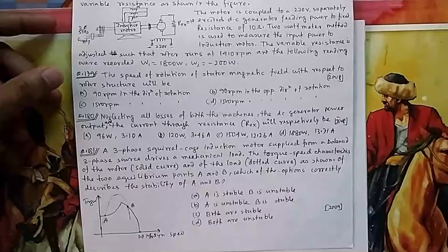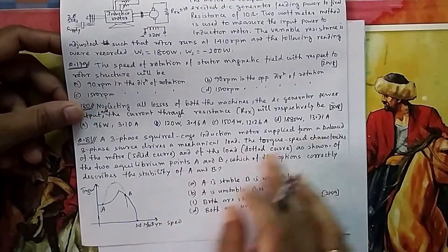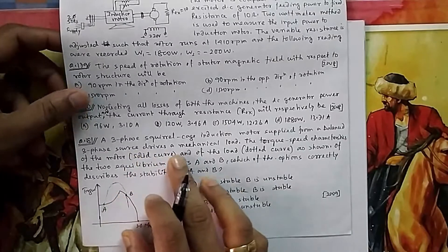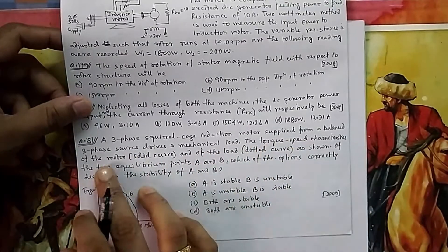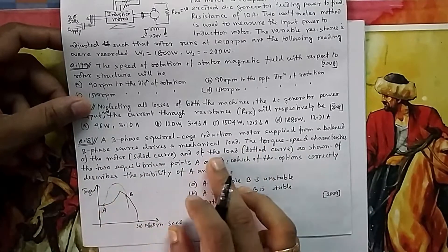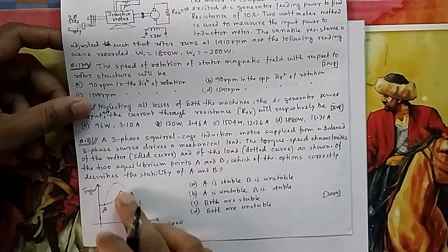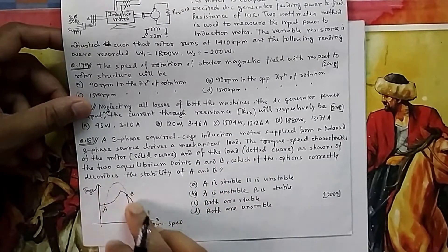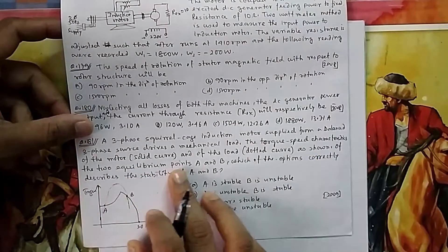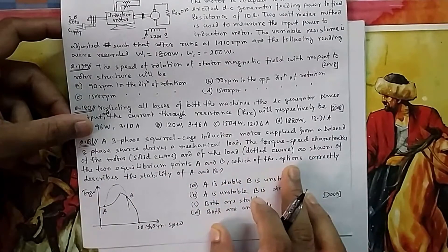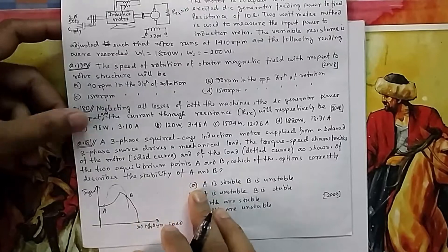Question 181: A 3-phase squirrel cage induction motor supplied from a balanced 3-phase source drives a mechanical load. The torque-speed characteristics of the motor, the solid curve, and the load, the dotted curve, are shown. Of the two equilibrium points A and B, which option correctly describes the stability of A and B?